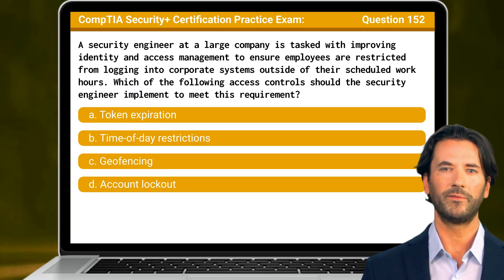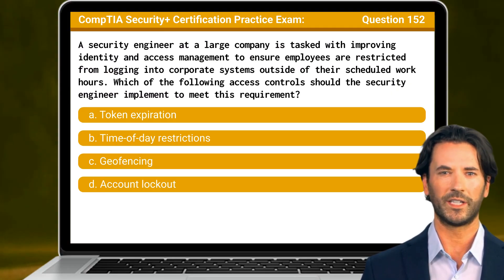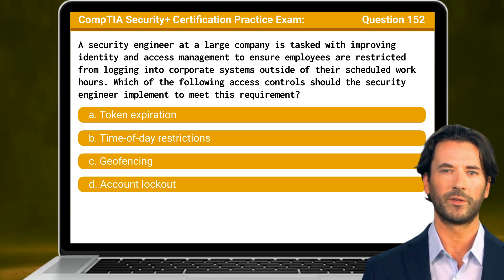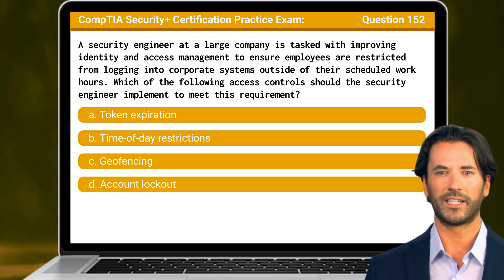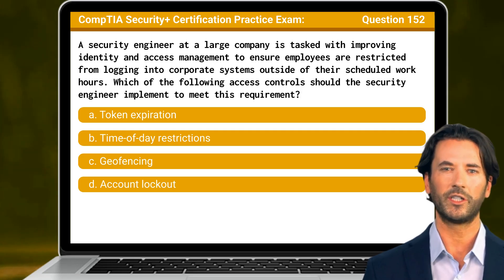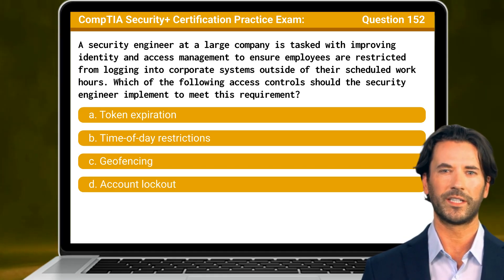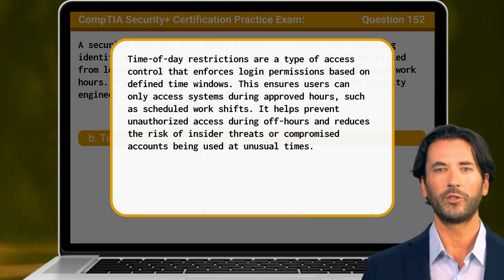Question 152: A security engineer at a large company is tasked with improving identity and access management to ensure employees are restricted from logging into corporate systems outside of their scheduled work hours. Which of the following access controls should the security engineer implement to meet this requirement? The answer is B: time of day restrictions.